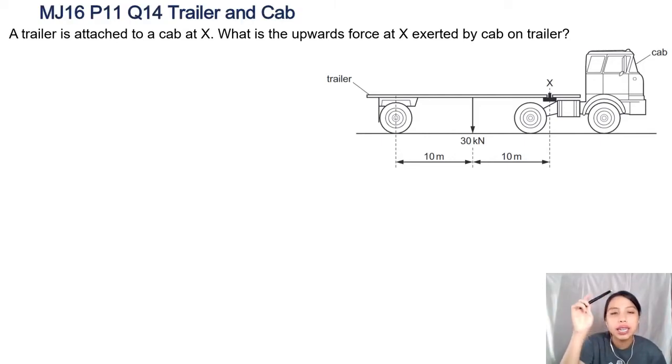The question is: a trailer is attached to a cab at X. What is the upward force at X by the cab on the trailer? What's happening? Let me try to make, let's say this is my hand.